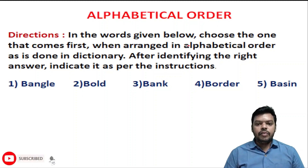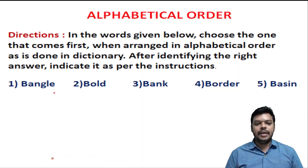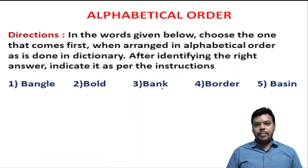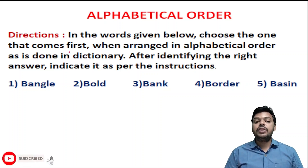Let's start. In the words given below, choose the one that comes first when arranged in alphabetical order. If we have 5 words, we can identify the first word by alphabetical arrangement.